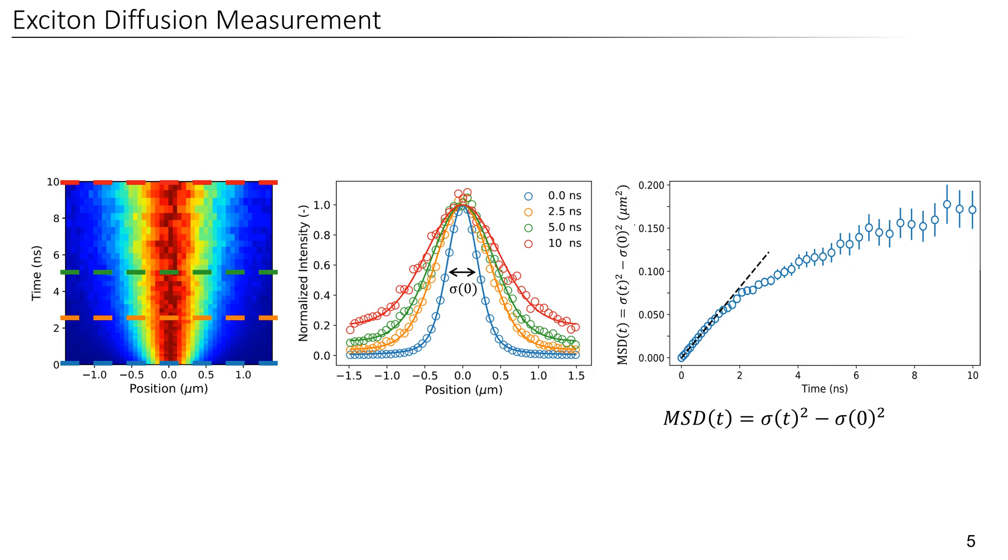Now diffusion theory tells us that the slope of this curve is proportional to the diffusivity of the excitons. And for constant slope, we have normal diffusion, meaning that excitons simply travel through the material by a random walk. Now fitting the data at early times, we are able to extract a diffusivity of around 0.2 cm² per second.